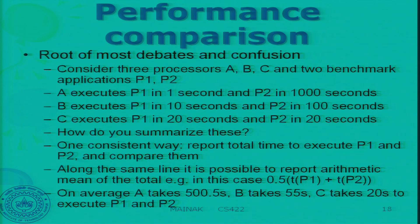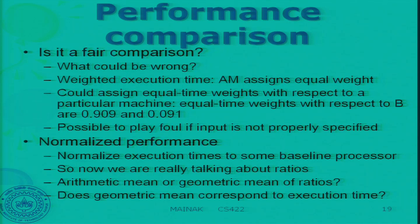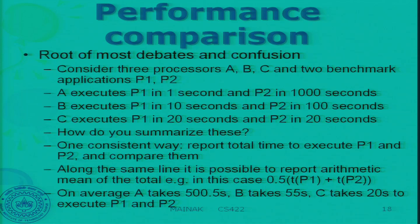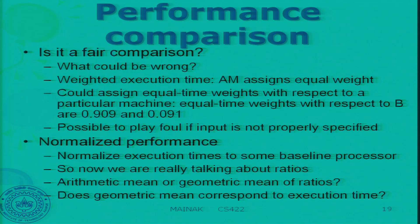Equal time weight with respect to B would be P1 getting a weight of 0.909 and P2 getting a weight of 0.091. If you give a weight of 0.909 to P1, you get 90.9 seconds of execution. This 0.091 weightage goes to program P2.